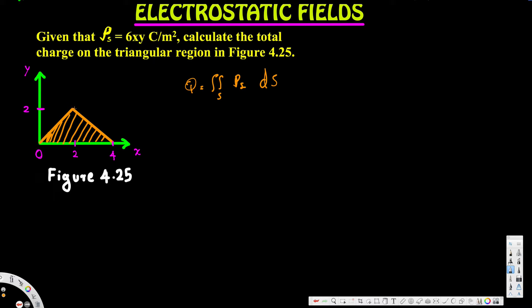First of all, in order to calculate the limits of integration, we can look at the equation of these lines. You can see this line right here going from (0,0) to (2,2). This point is (0,0) and this is (2,2). So when x is zero it's zero, when it's one it's one, when it's two it's two — the slope is increasing, m equals one. The line is a plus-one line, so the equation is y equals x.